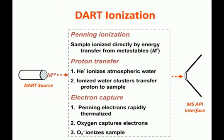To a first approximation, the first step is that electronically excited helium ionizes atmospheric moisture, and the ionized water clusters then can transfer a proton to a sample — that's the primary mechanism for ionization in positive ion mode. But in negative ion mode, the electron produced in the first Penning ionization step interacts with atmospheric oxygen, and the ionized oxygen then produces ions from the sample.